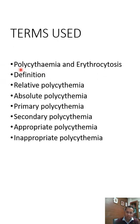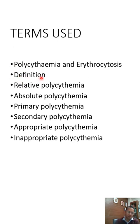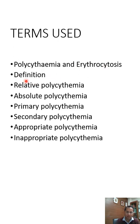Coming to the definition of polycythemia, there are multiple definitions, but the one we use here is: for males, anything above 18 grams per deciliter, and for females, 16.5 grams per deciliter. That is the definition we follow.